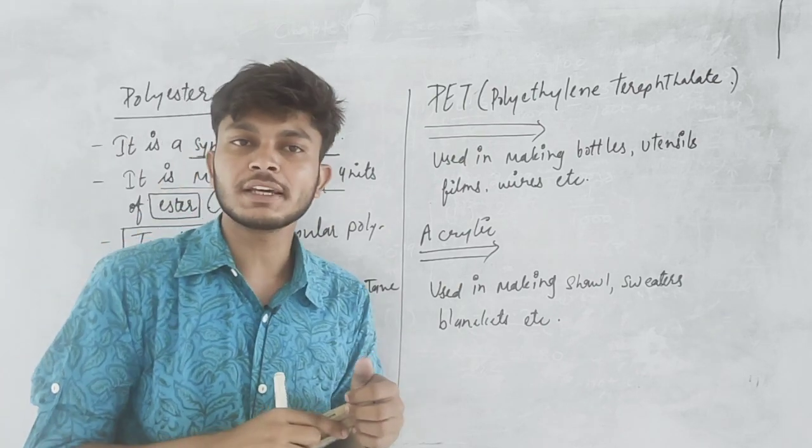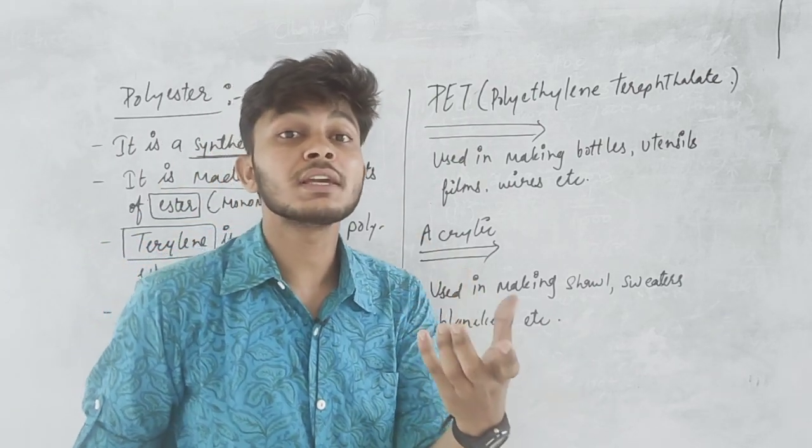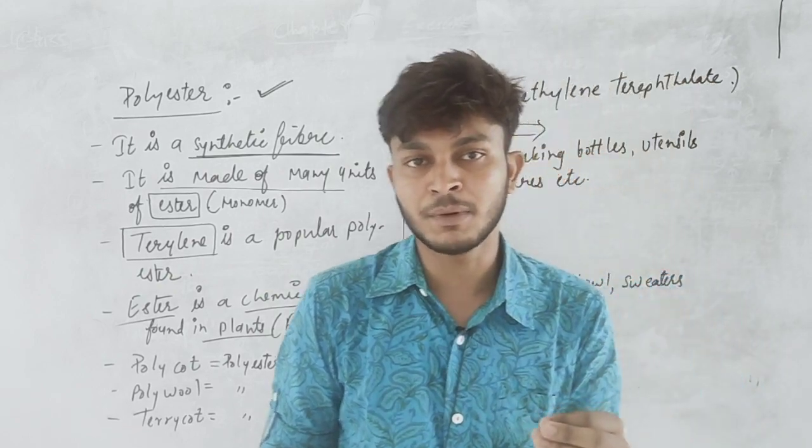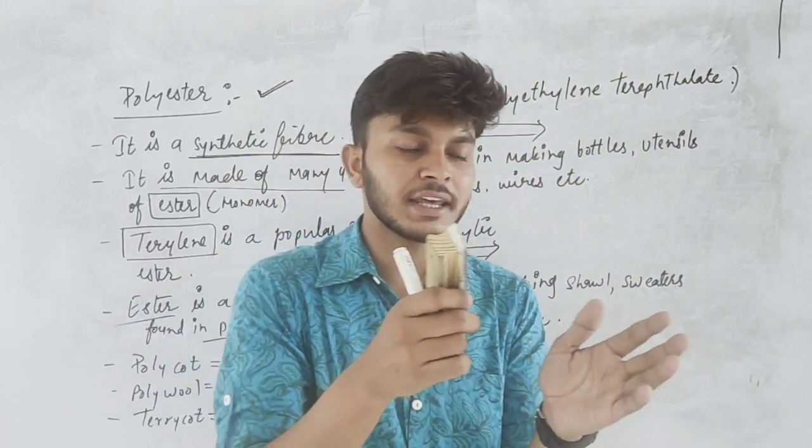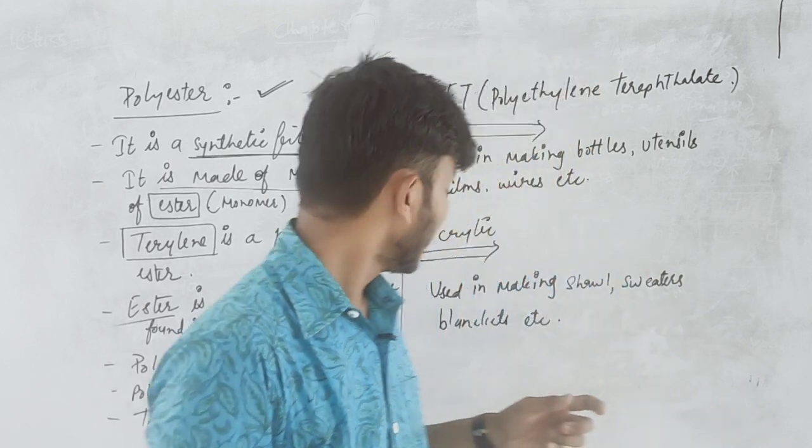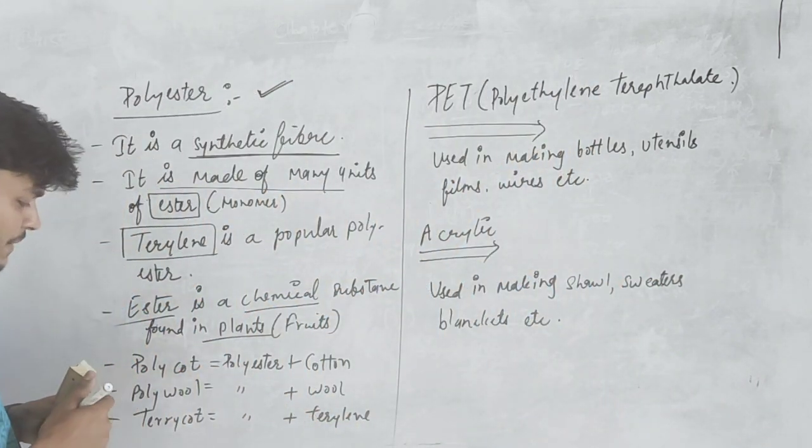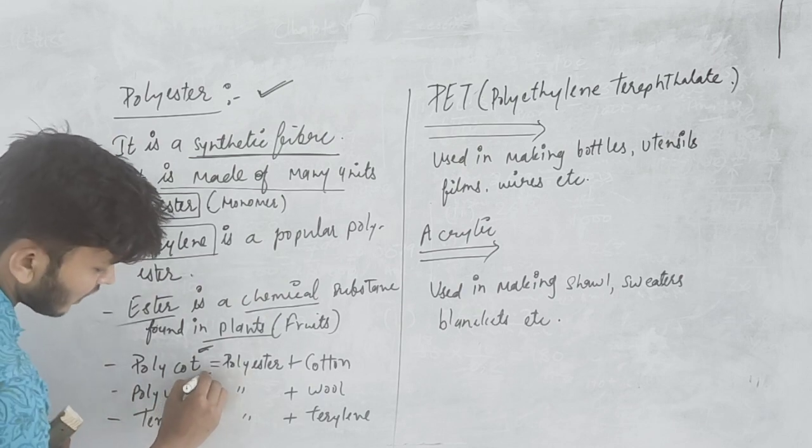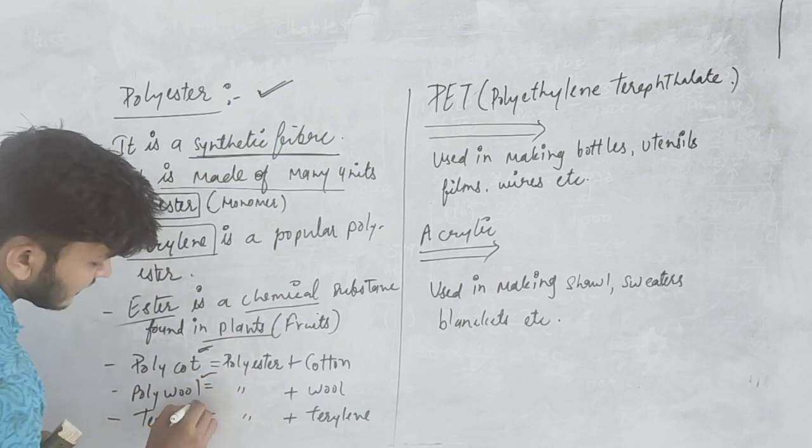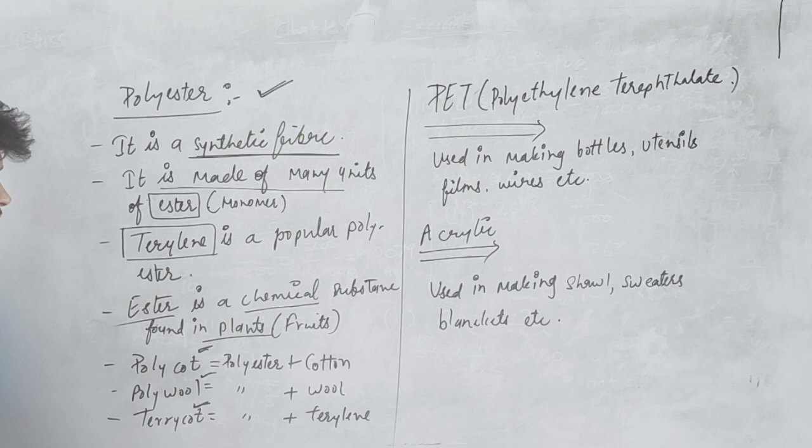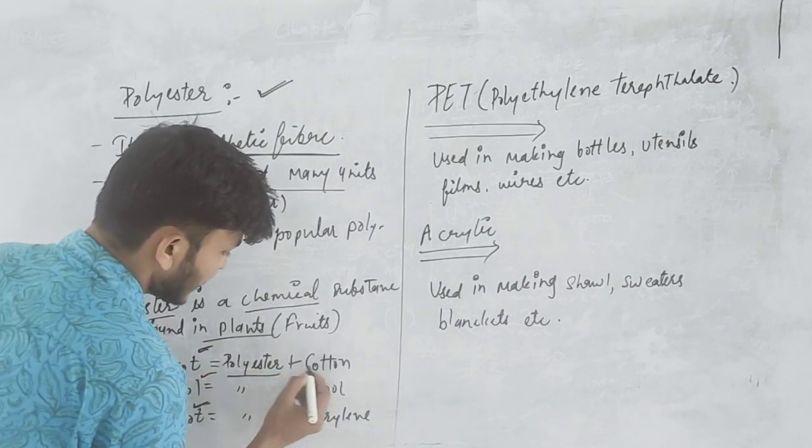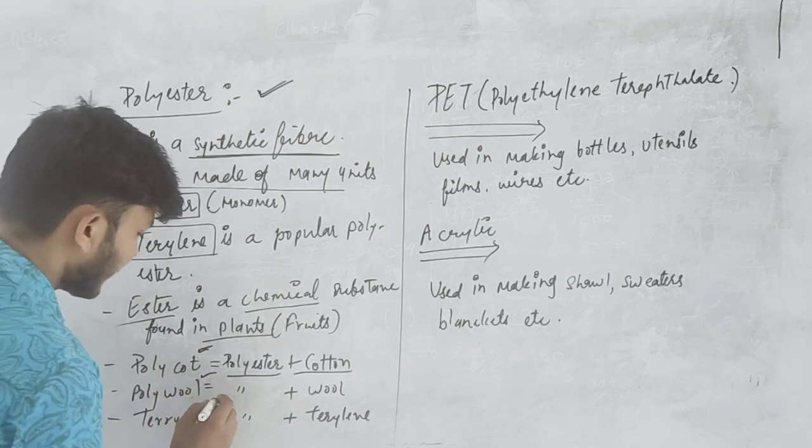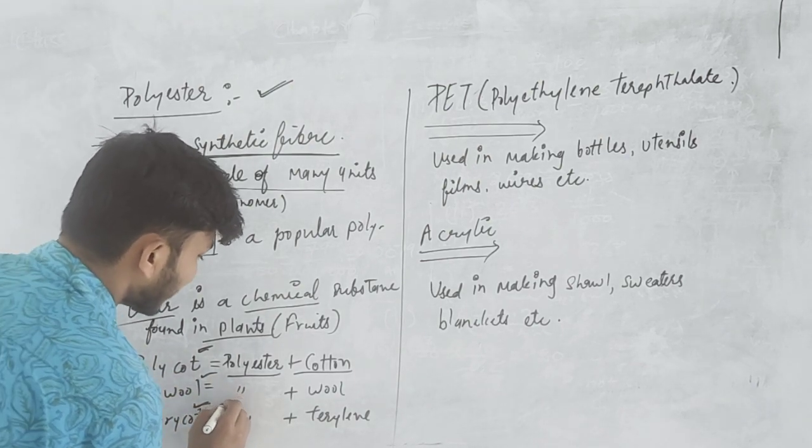With polyester, we can mix different fibers - natural fibers and synthetic fibers are mixed, like polycote, polywool and terricote. Polycote is polyester and cotton. Polywool is polyester and wool.